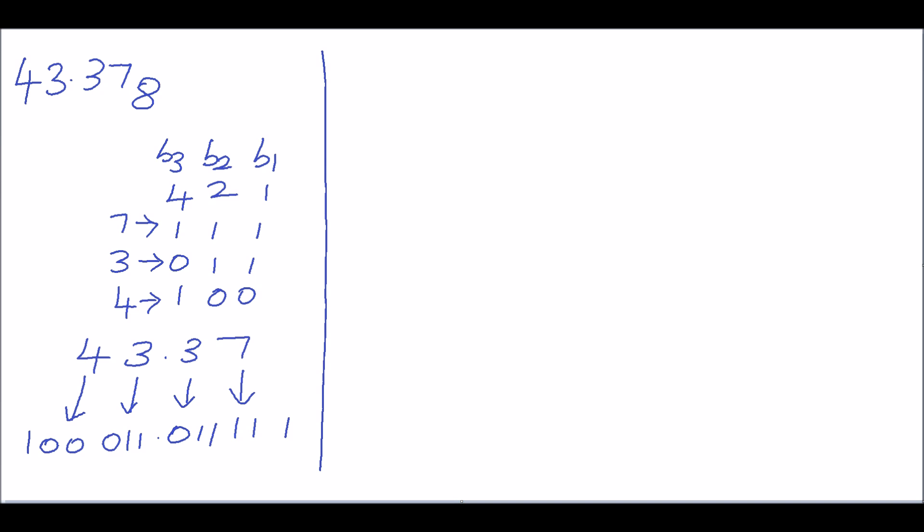Now we have converted the given octal number into its equivalent binary number. The next step will convert this binary into its equivalent hexadecimal number. Write the binary number: 1, 0, 0, 0, 1, 1, 0, 1, 0, 1, 1, 1, 0. In the hexadecimal number system, the base is 16 and the numbers 0 to 9 and A to F can be represented in binary with 4 bits. So break the binary number into groups of 4 bits.